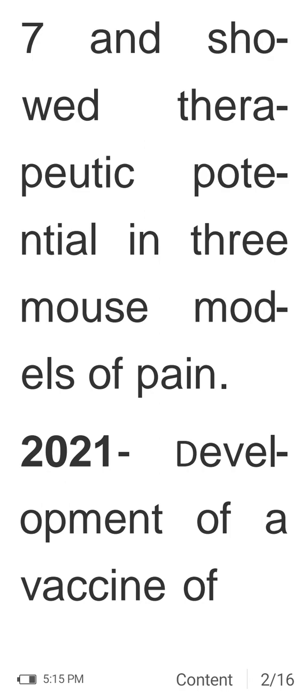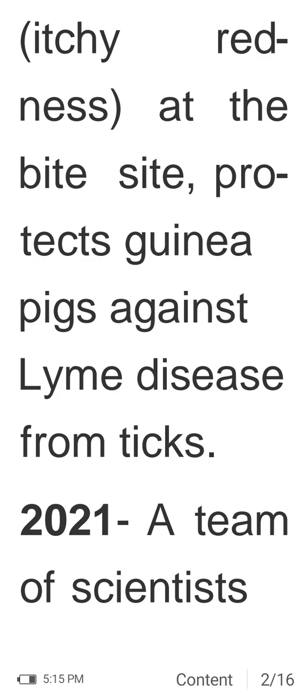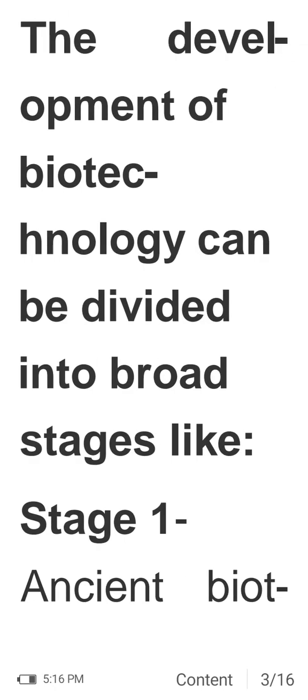In 2021, an mRNA vaccine was developed for the body to build proteins, enabling quick development of a bite-site reaction that protects guinea pigs against Lyme disease from ticks. Also in 2021, a team of scientists reported a new form of biological reproduction in xenobots — less than 1mm sized organisms made up of frog cells.